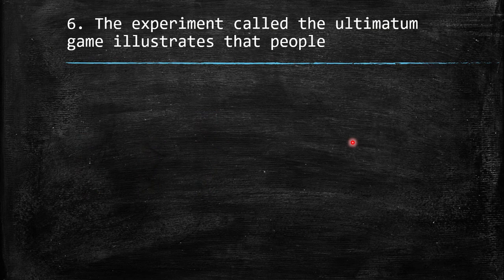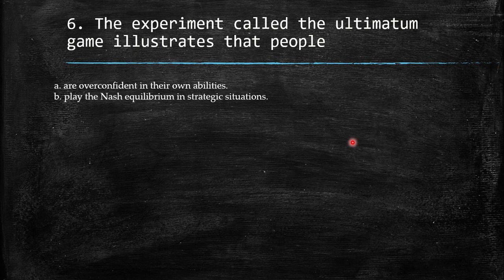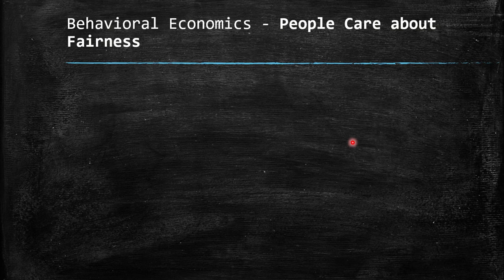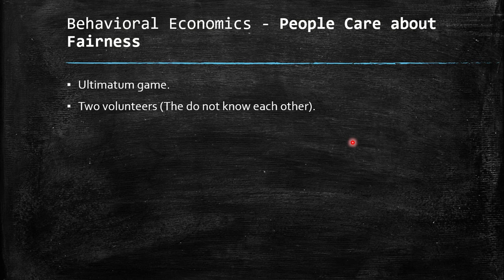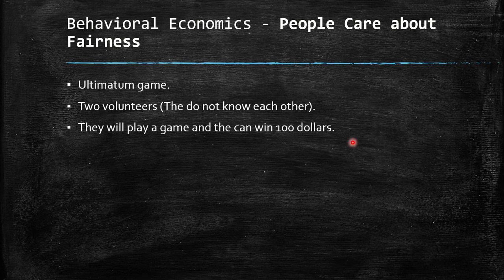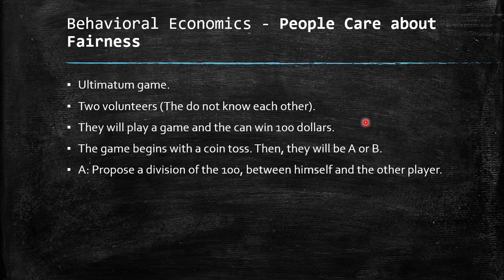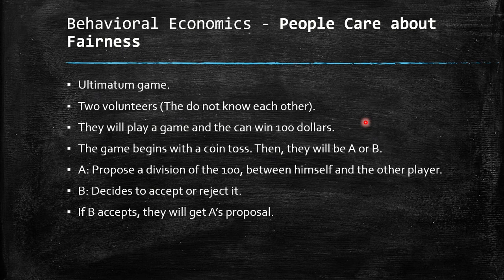Last but not least, we have the Ultimatum game. It illustrates that people are overconfident in their own abilities, play Nash equilibrium in strategic situations, care about fairness even to their own detriment, or make inconsistent decisions over time. The Ultimatum game involves two volunteers who don't know each other — they play a game and can win $100. The game begins with a coin toss, making them Player A or Player B. A proposes a division of the $100 between himself and the other player, then B decides to accept or reject it. If B accepts, they get A's proposed split.